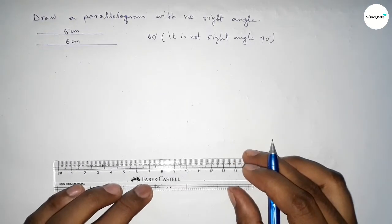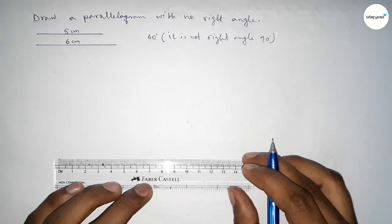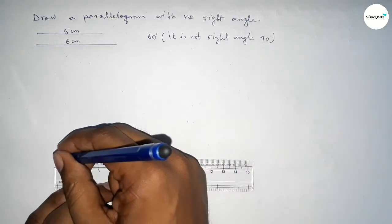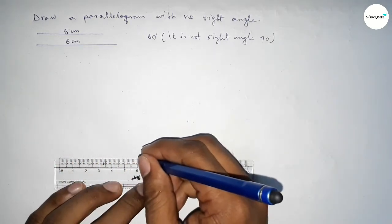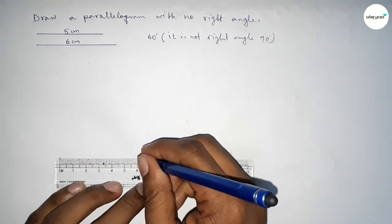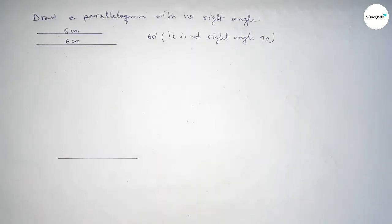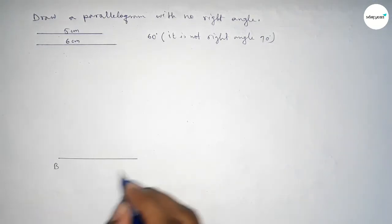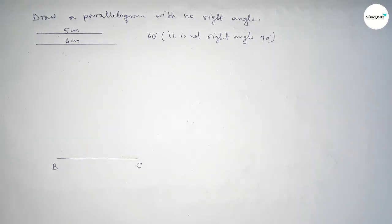First we have to draw the line of 6 centimeters. Drawing a line of length 6 centimeters, taking here point B and here point C.